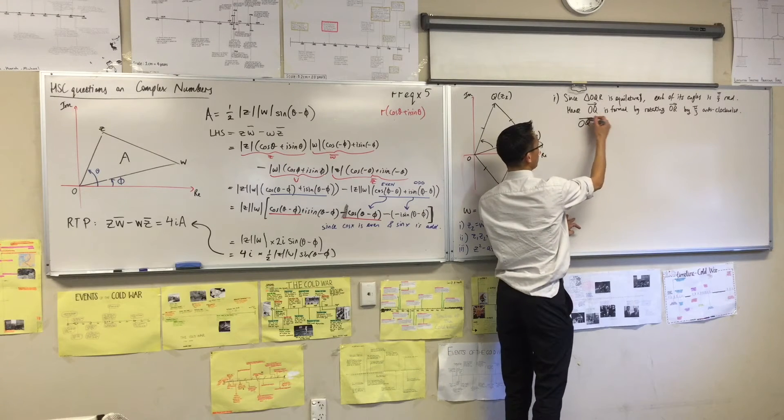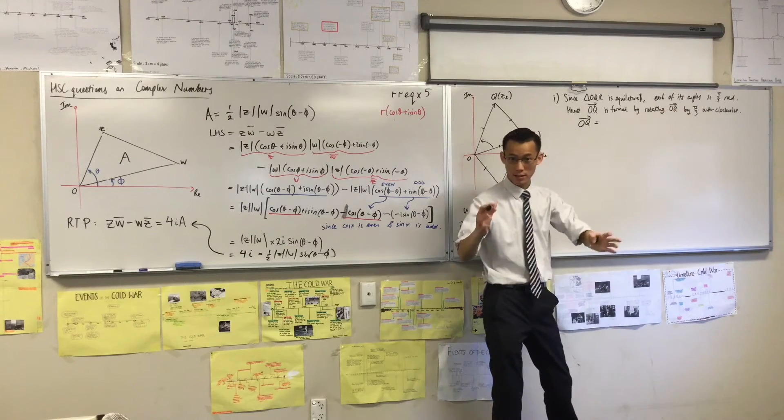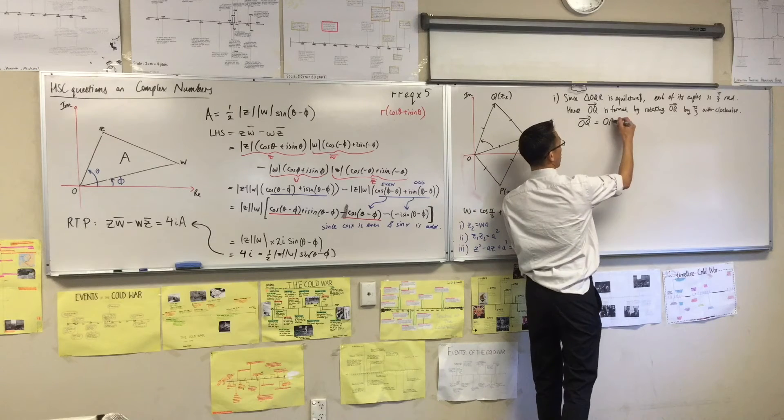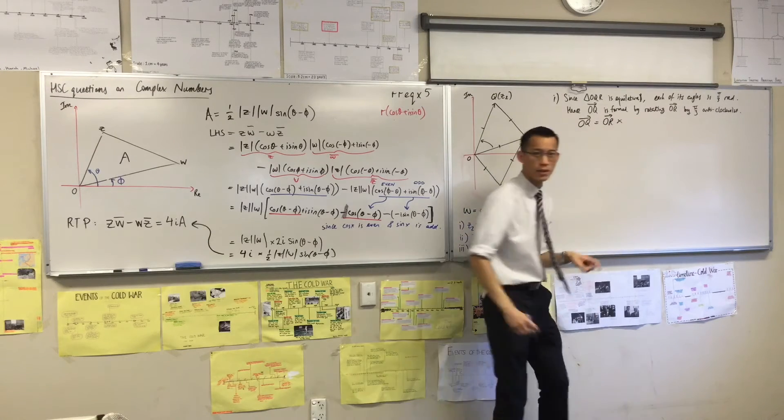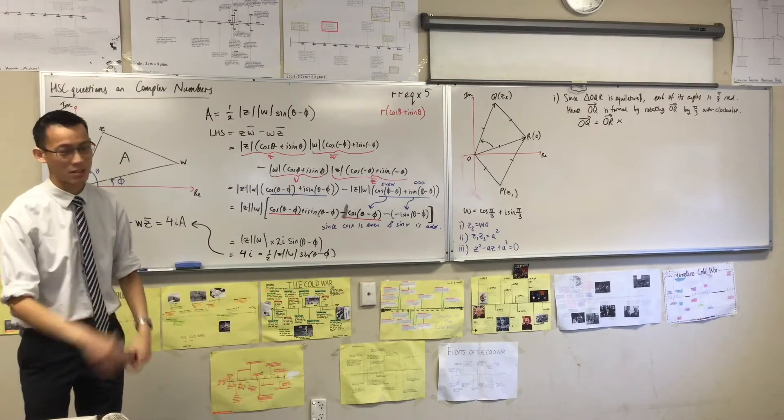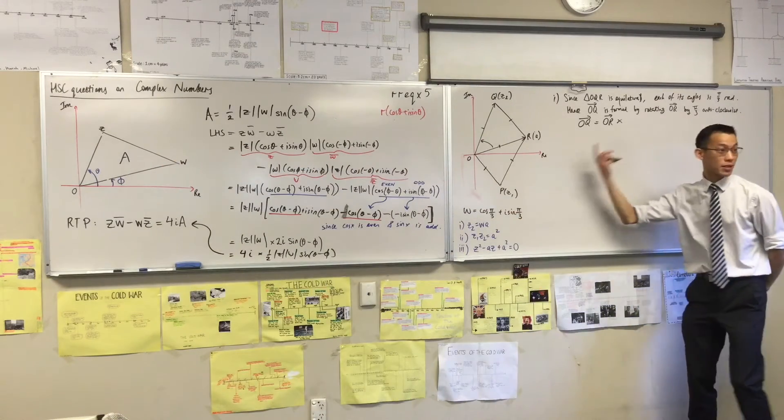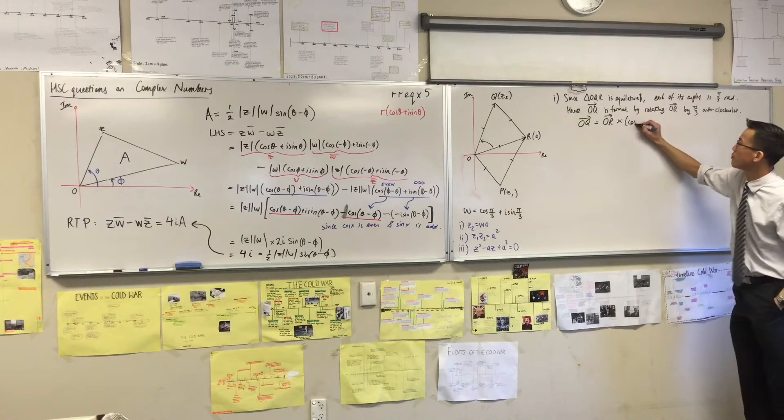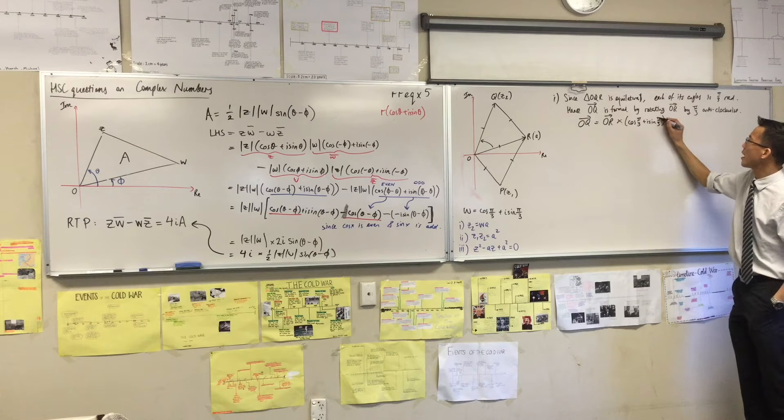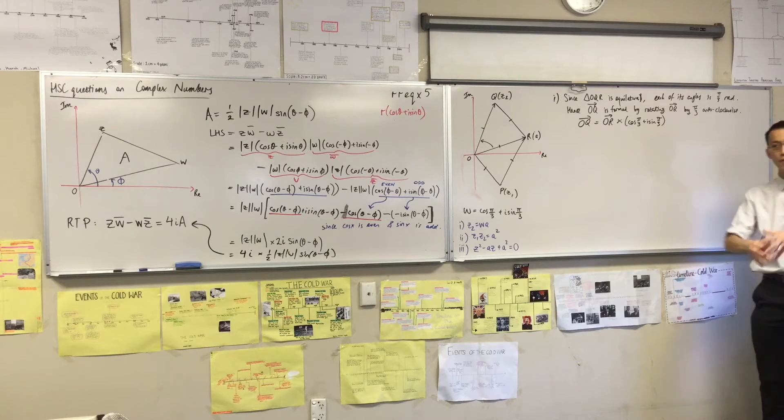So I am going to provide an equation that tells me that. So O, Q equals—now rotation of complex numbers and vectors is formed by what operation? It's multiplication. So I'm going to go O, R times, now what's the complex number that will rotate me π on three radians in the clockwise direction? And the answer is cos(π/3) + i sin(π/3). I'm going to write that.